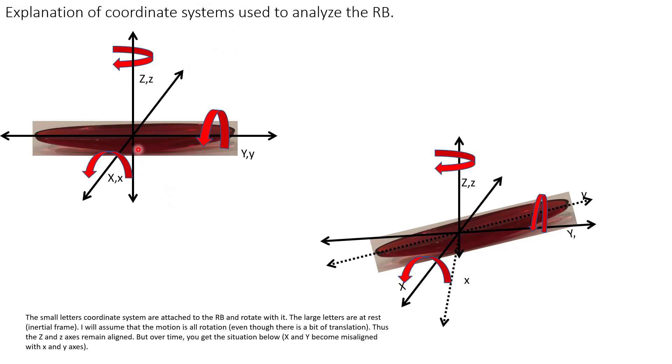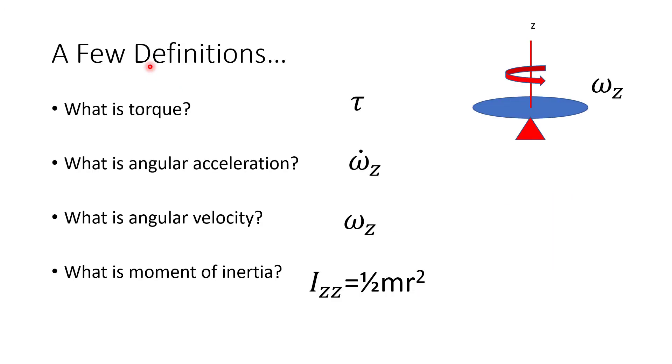The little x, y, z will be attached to the Rattleback and rotate with it. The capital X, Y, Z will remain at rest, called an inertial frame. Just a few definitions before we start. What is torque?